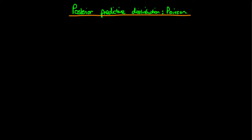In this video, I want to provide a derivation of the posterior predictive distribution for the circumstance of when we're dealing with a Poisson likelihood and a gamma prior. We're going to derive the posterior predictive distribution via use of Bayes' rule. What we're actually looking to find is the probability of a certain new data point x primed, given that we've observed a vector of data x.